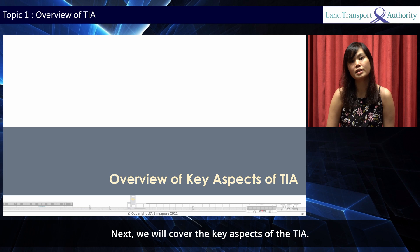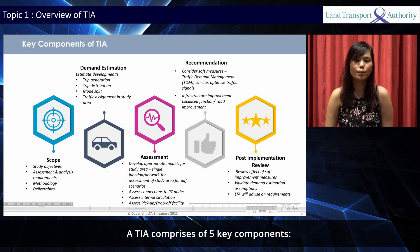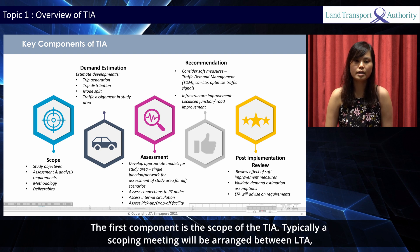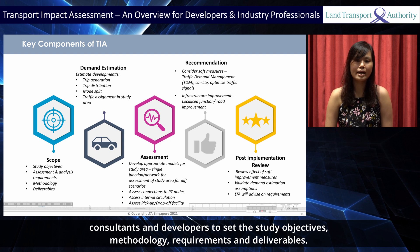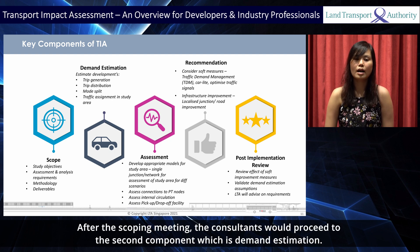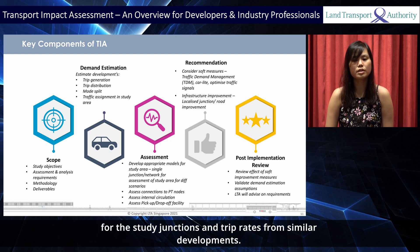A TIA comprises 5 key components. The first component is the scope of the TIA. Typically, a scoping meeting will be arranged between LTA, consultants and developers to set the study objectives, methodology, requirements and deliverables. After the scoping meeting, the consultants would proceed to the second component which is demand estimation. For this, the traffic consultants would proceed to collect the necessary data such as traffic counts for the study junctions and trip rates from similar developments.